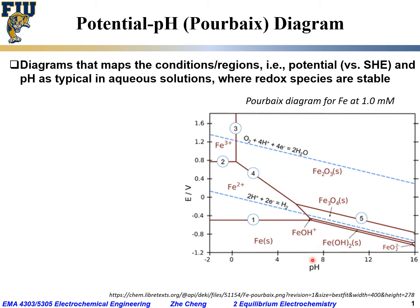This is an example of a Pourbaix diagram. Potential is typically on the vertical axis, and pH is typically on the horizontal axis. This is a Pourbaix diagram for iron in aqueous solution at 1.0 millimolar.